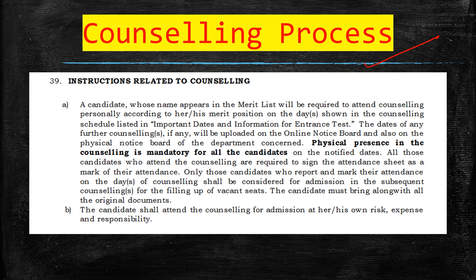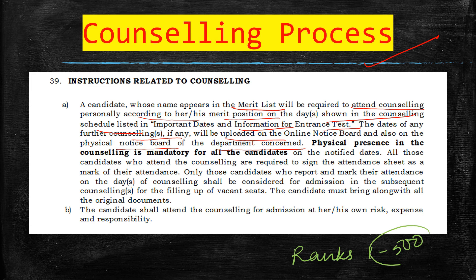Regarding the counseling process: a candidate whose name appears in the merit list will be required to attend counseling personally according to their merit position on the days shown in the counseling schedule. Any further counseling dates will be uploaded on the online notice board and the physical notice board of the department. Counseling is rank-based — for example, ranks 1 to 500 will be called category-wise with specific dates assigned.